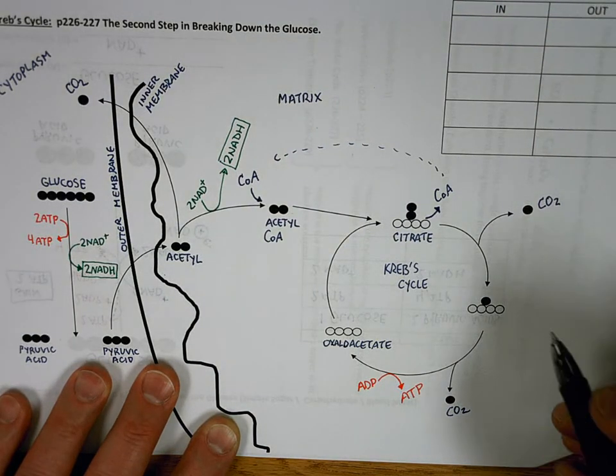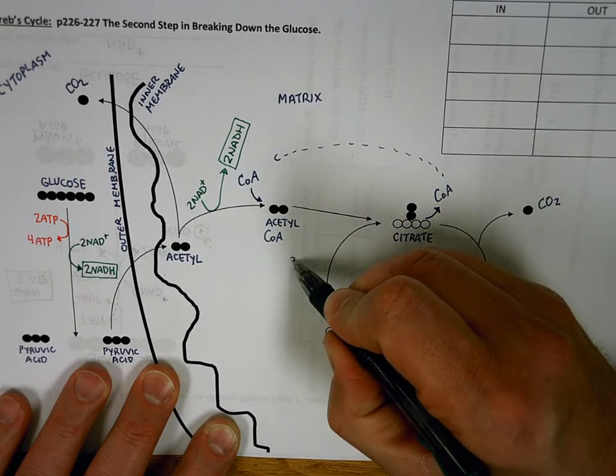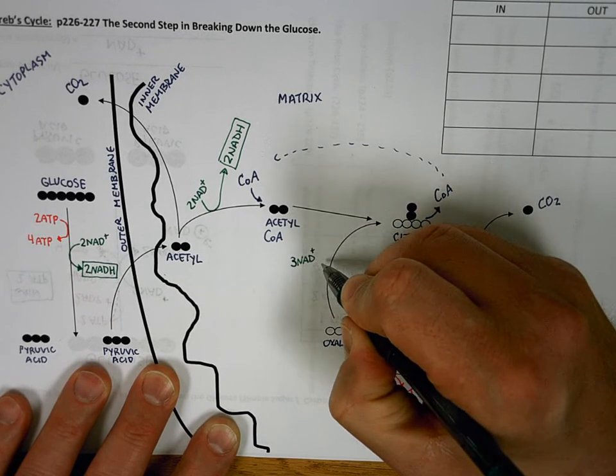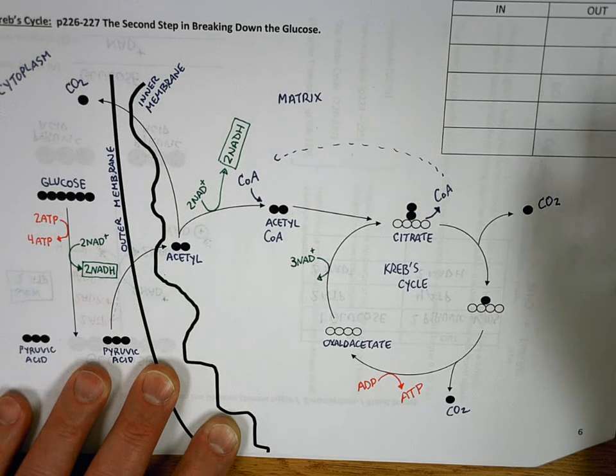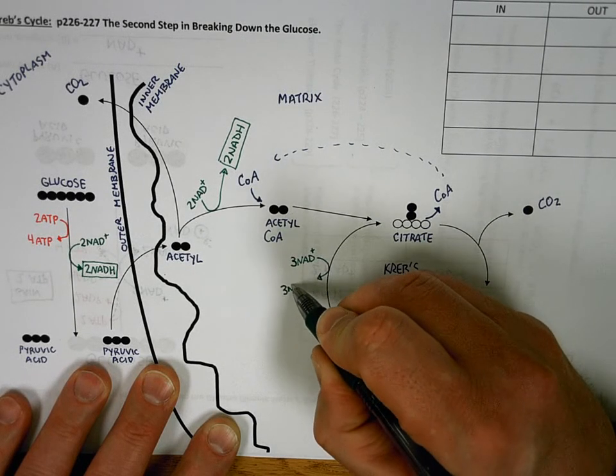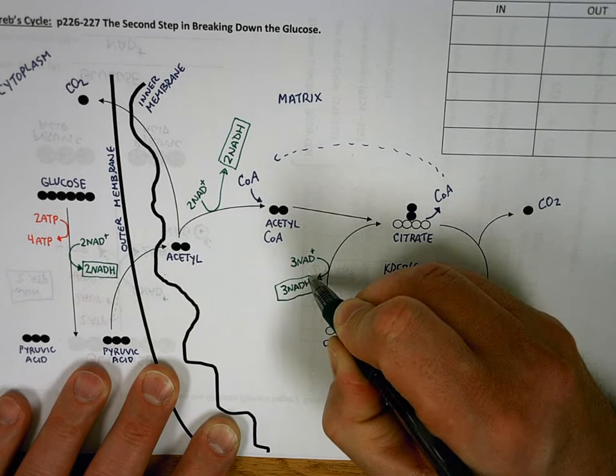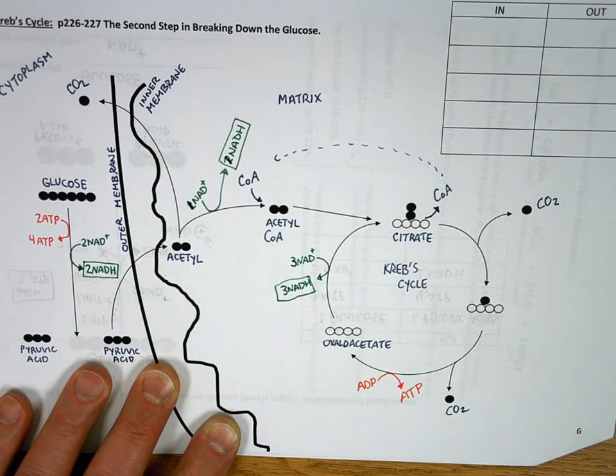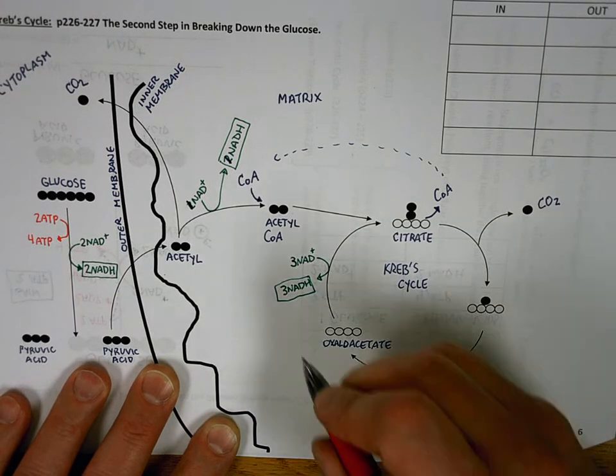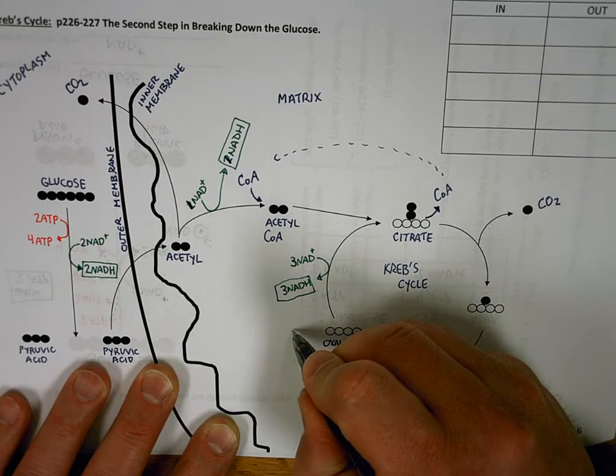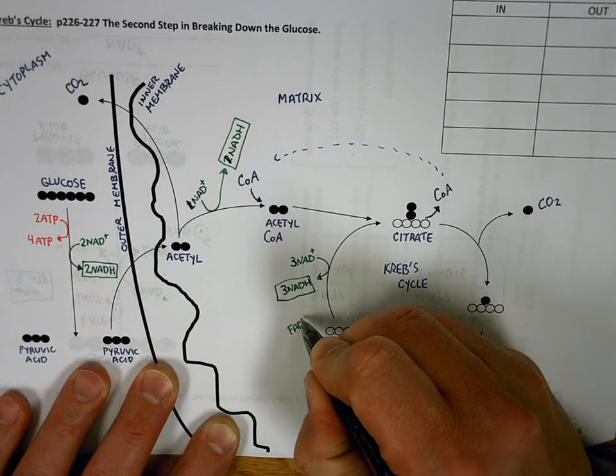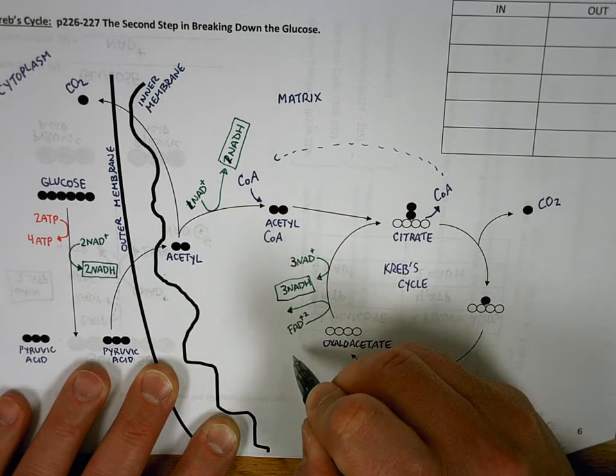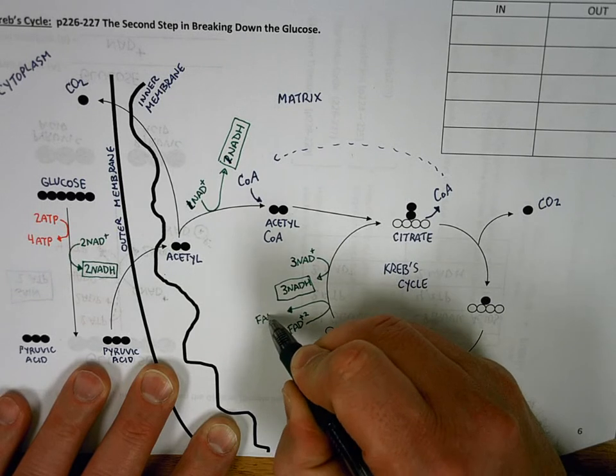Also, in the Krebs cycle, three NAD per pyruvic acid pick up electrons and become three NADHs. Let's make a correction here. This is actually one over here, one per pyruvate, which means when the second pyruvic acid comes through, it will be another one. There's another molecule that picks up electrons similar to NAD, it's called FAD. But when FAD picks up electrons, it can carry more. So we'll have an FAD picking up electrons here, and it'll become FADH2.